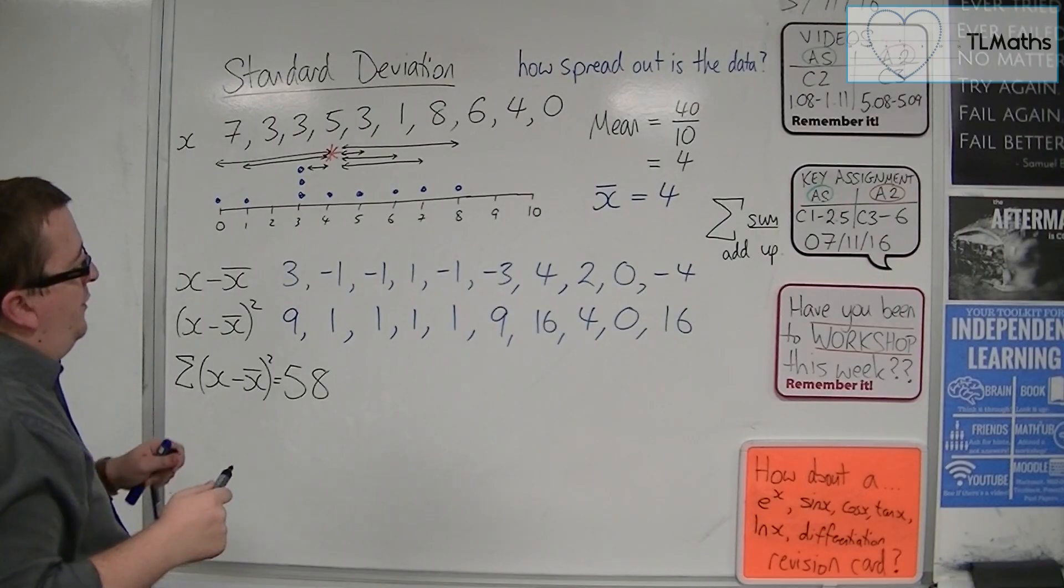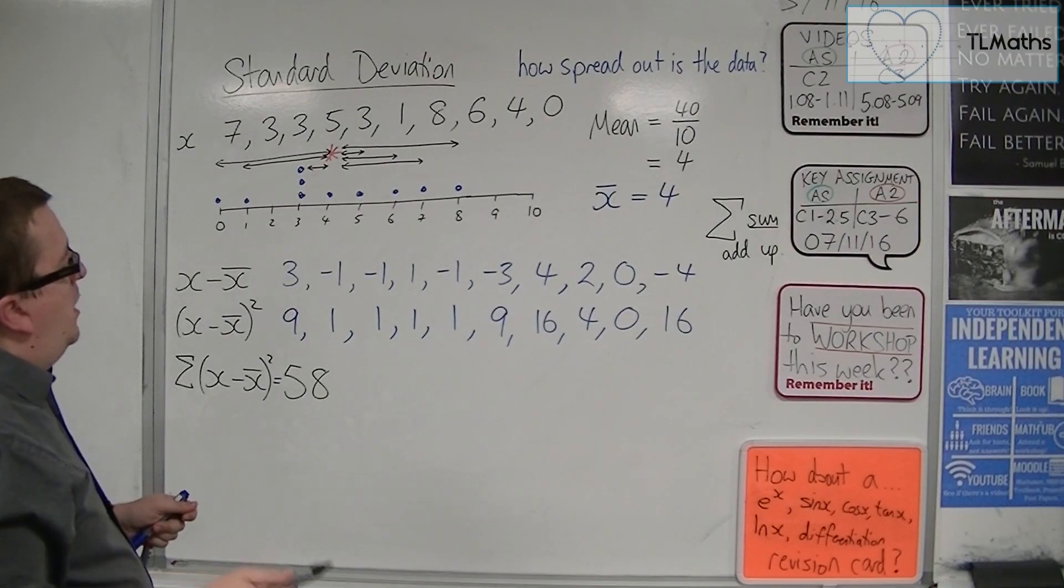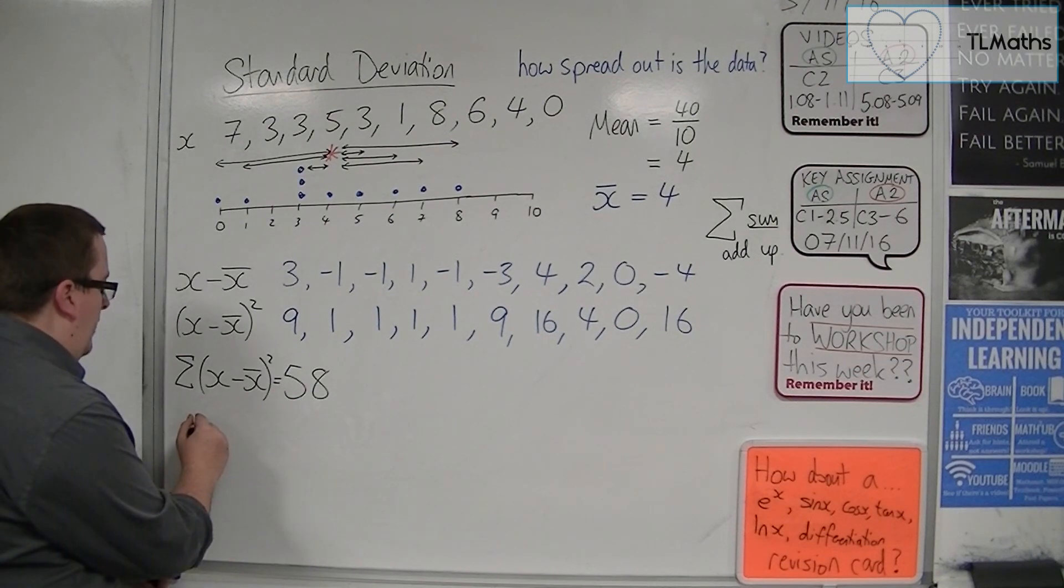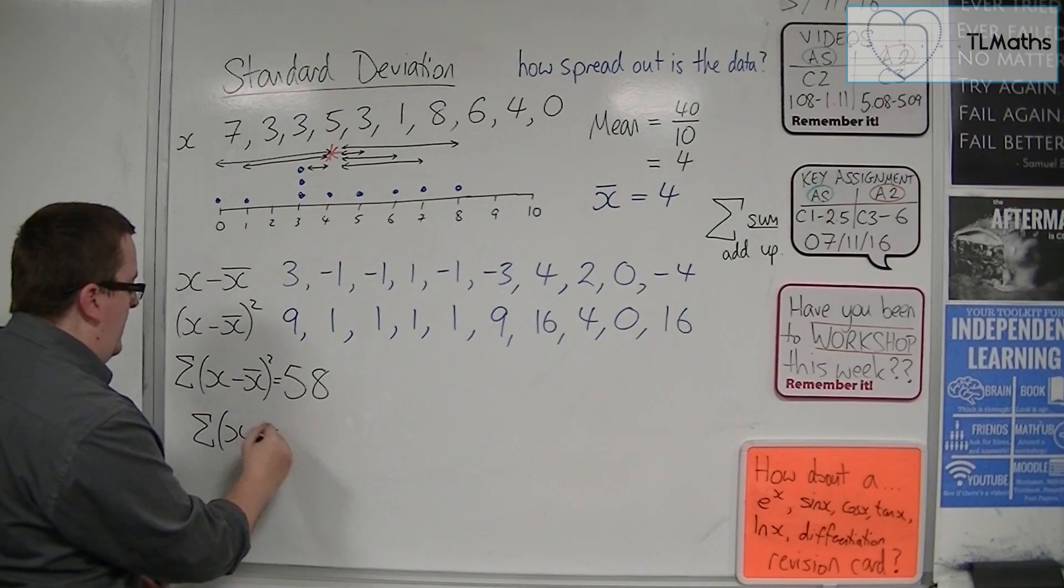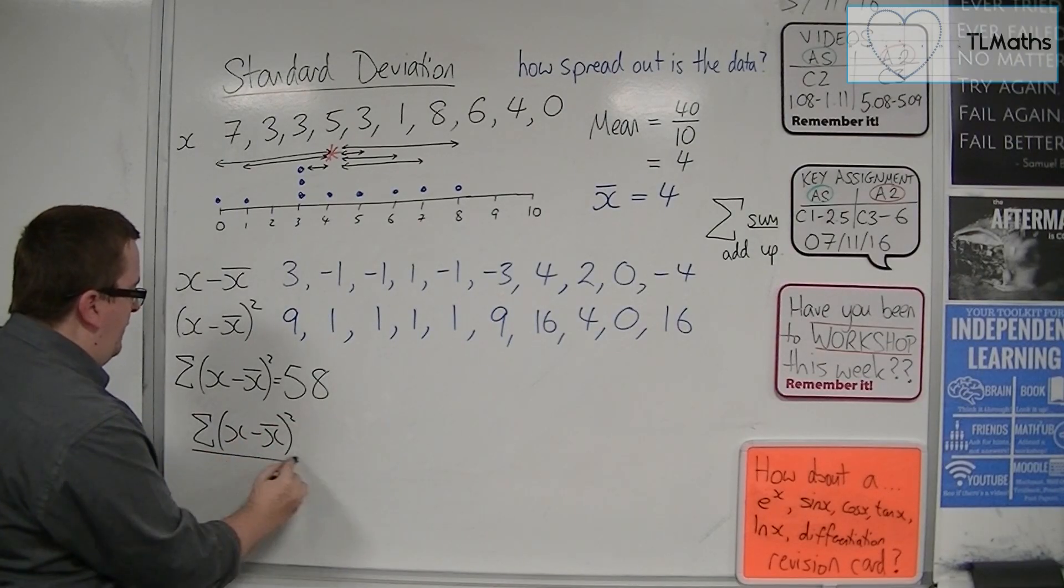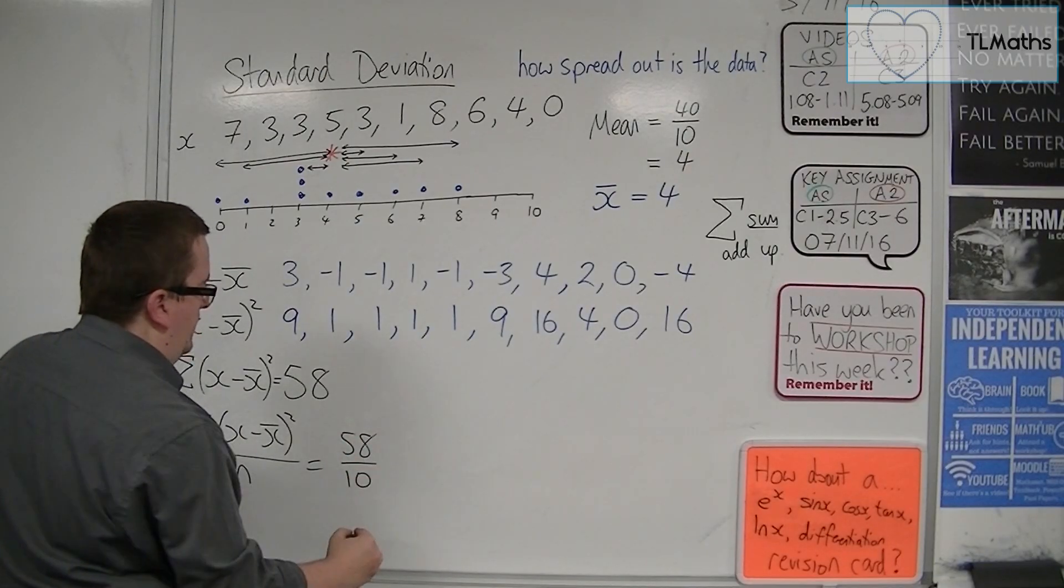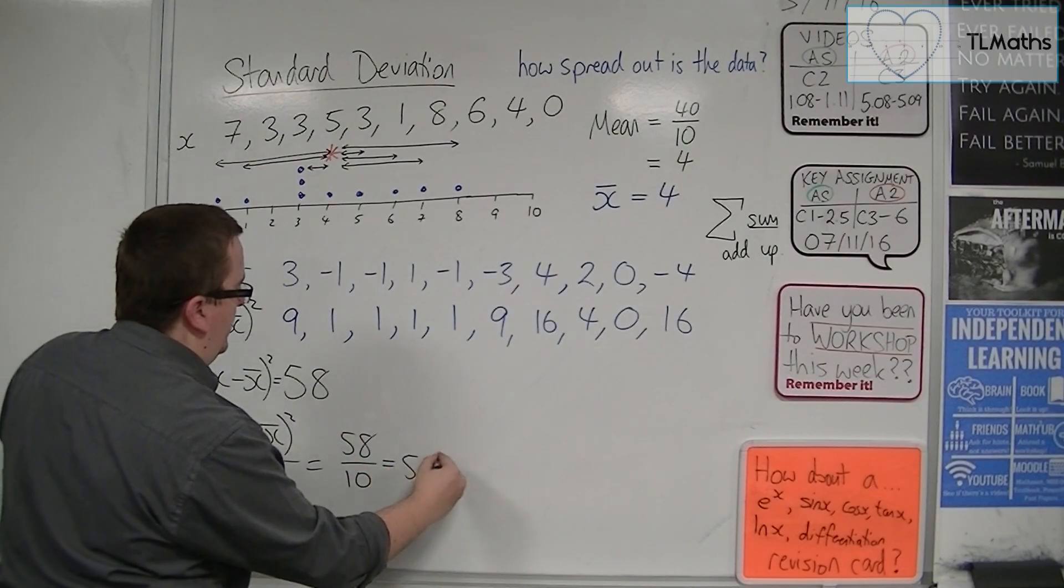Now, this I could represent by saying, well, that's all of the x minus x bars squared added together. This symbol here is used to represent a sum. So, it means add them all up. So, add up all of those, and I get 58. Now, I want to divide that by how many there were. So, if I want to divide that by how many there were, I'm going to divide it by n. 58 divided by 10. And that gets me 5.8.